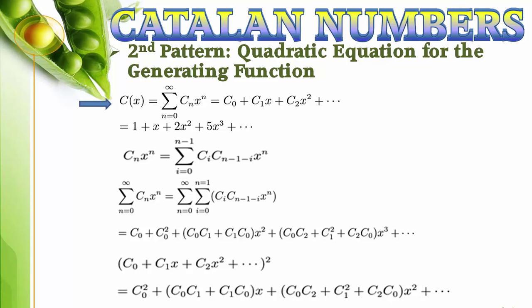To get from the recurrence relation to the generating function, we first multiply both sides of our recurrence by x to the nth power, and then sum over all non-negative integers n. The left-hand side of the equation is the generating function we want. The right-hand side of the equation looks a lot like the generating function squared.